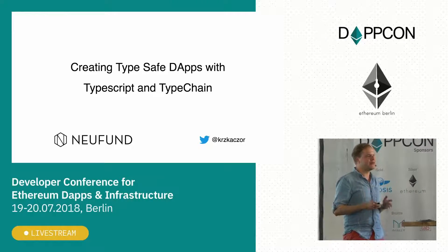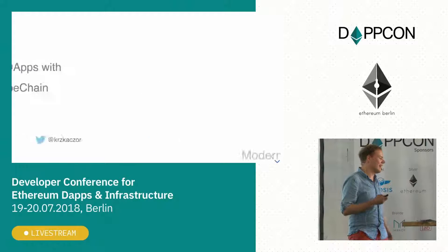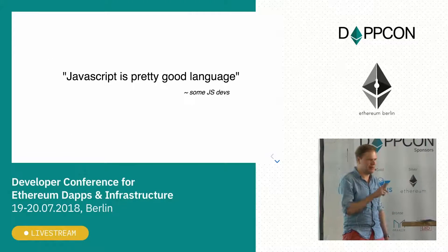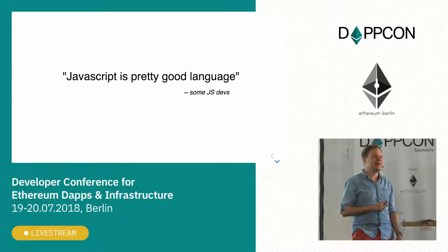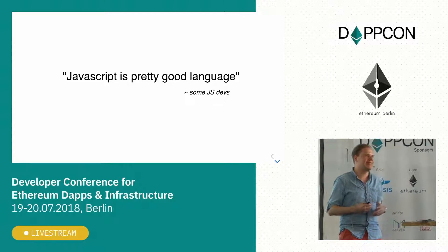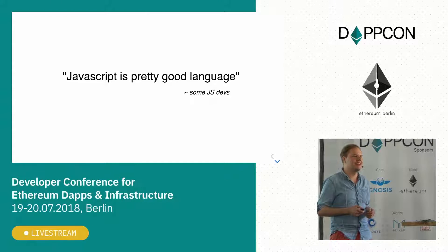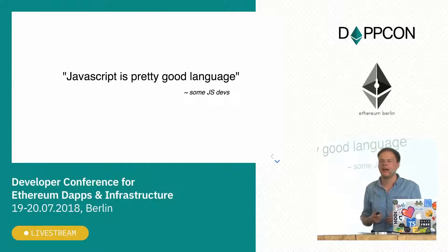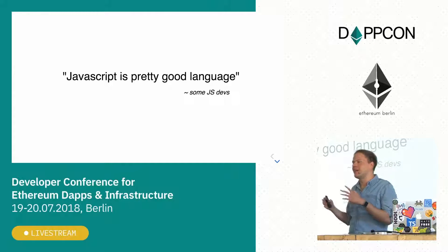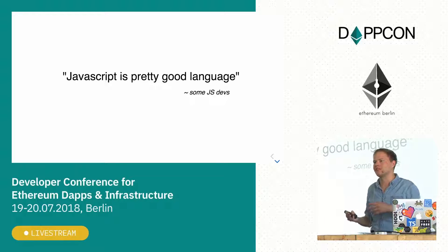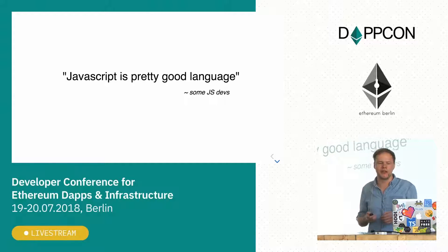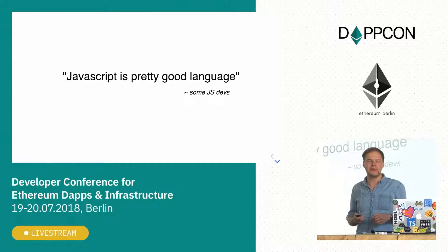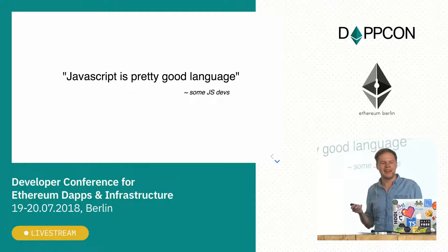Let me start with a pretty bold statement: JavaScript is a pretty good language, as some JavaScript devs say. What I mean is that in the past, JavaScript was pretty much a meme language — there were lots of odd behaviors like scoping rules, or you know, one plus an empty array gives you something weird. There were lots of implicit conversions going on.